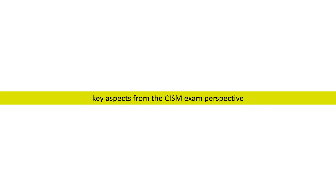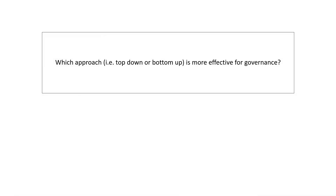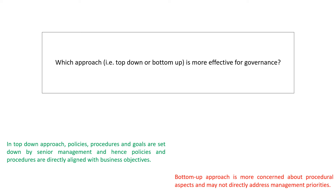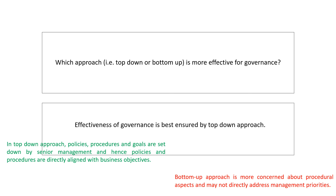Let us discuss some key aspects from an exam perspective. Which approach — top-down or bottom-up — is more effective for governance? In the top-down approach, policies, procedures and goals are set by senior management, and hence policies and procedures are directly aligned with business objectives. Whereas in the bottom-up approach, more emphasis is given on the procedural aspect and it may not directly address management priorities. Considering this, top-down is considered more effective for governance.